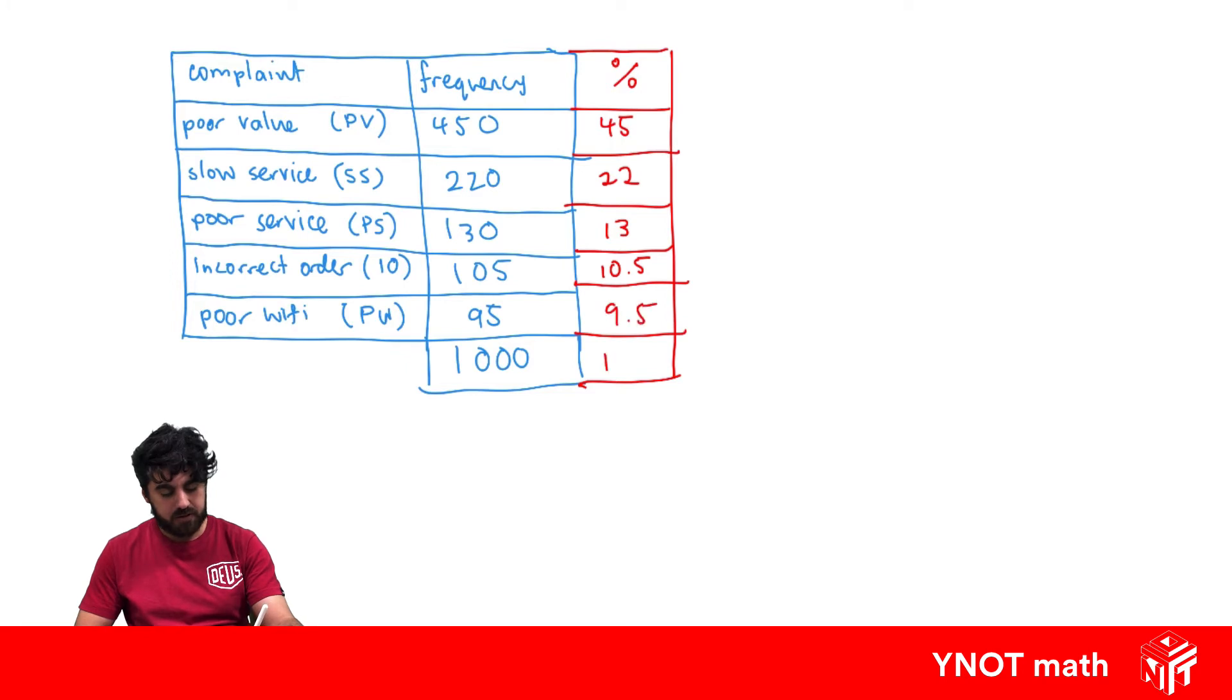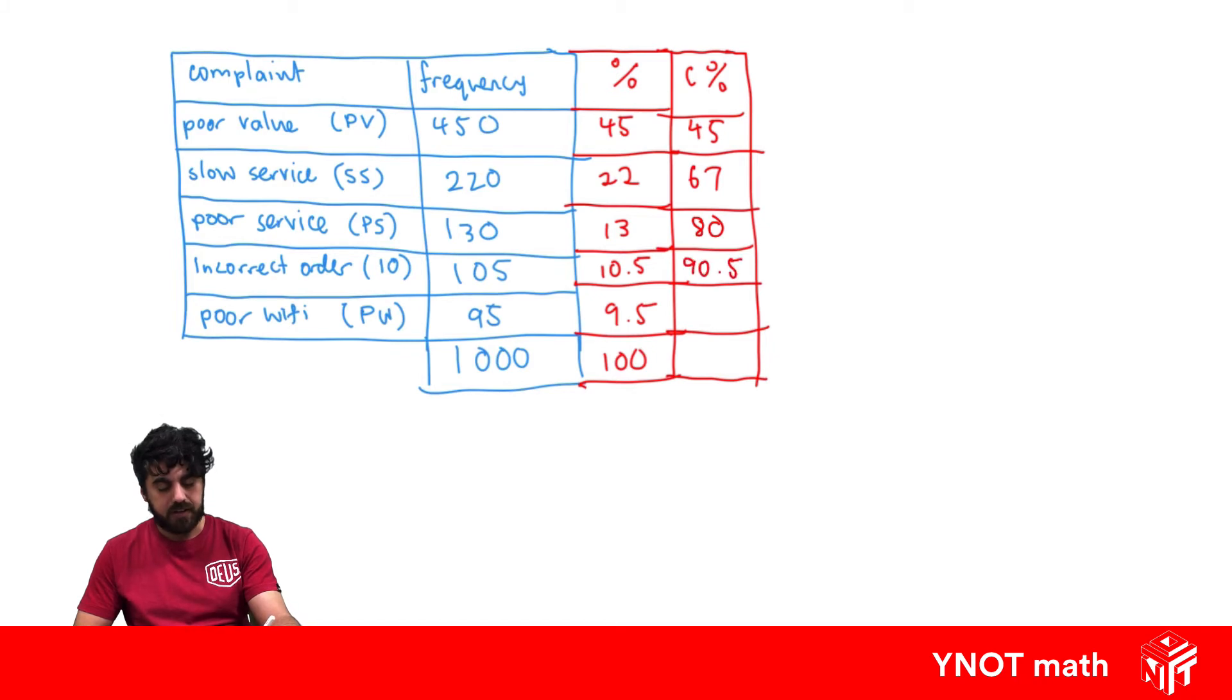This should total to a hundred percent. Now we're going to get the cumulative percentage. The first one is just the first value for the percentage, 45. Then the next one we're adding the next percentage to our total so far, so 22 plus 45 is 67. Next one, 67 plus 13 gives 80. 80 plus 10.5 gives 90.5, and 90.5 plus 9.5 gives us a hundred. If you've done that correctly, the last one here should always be a hundred.